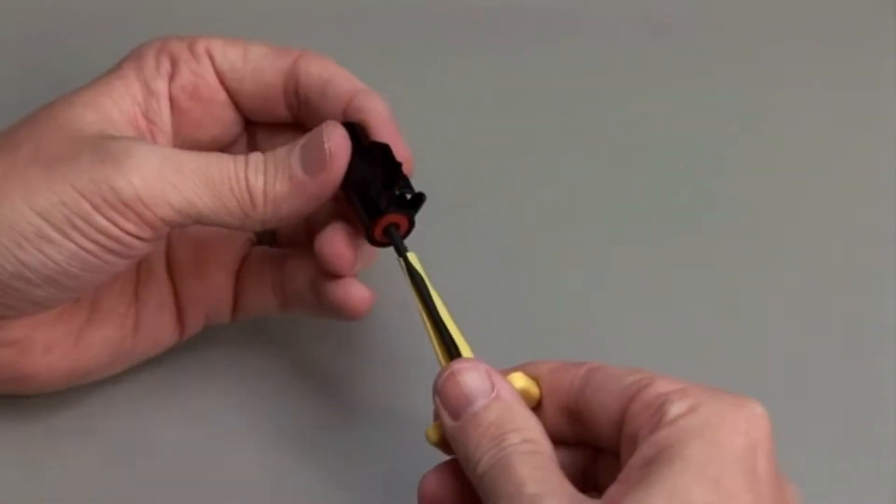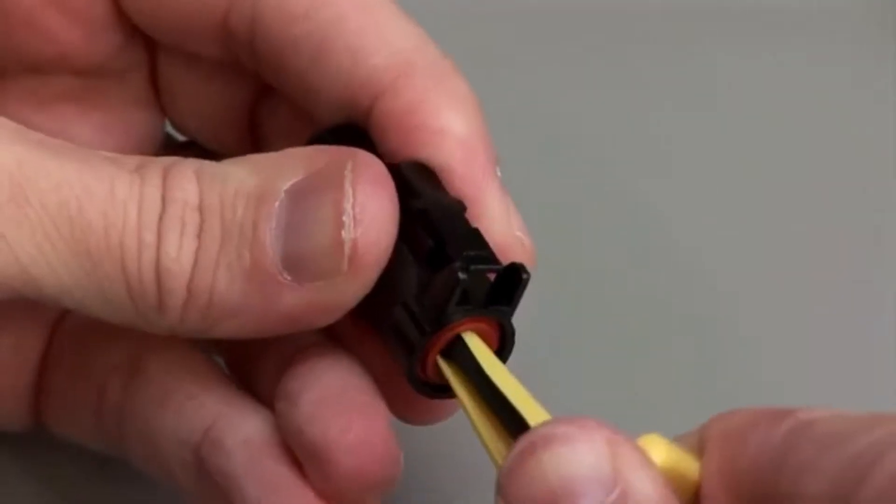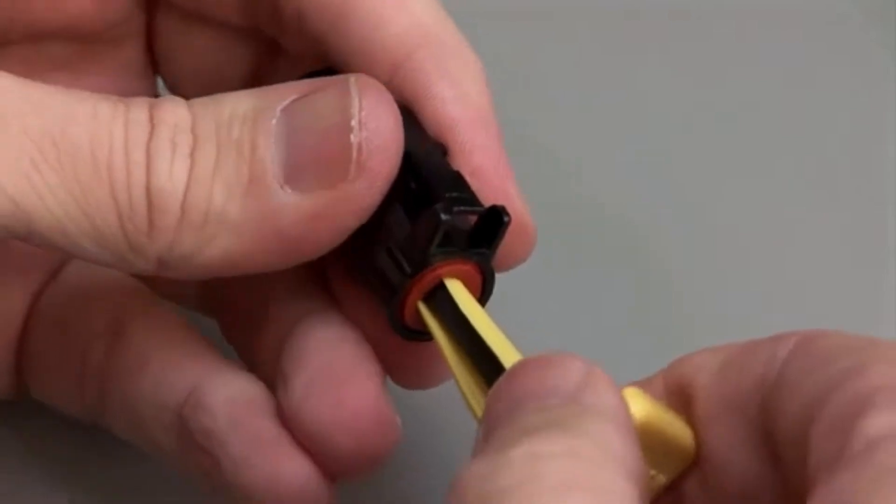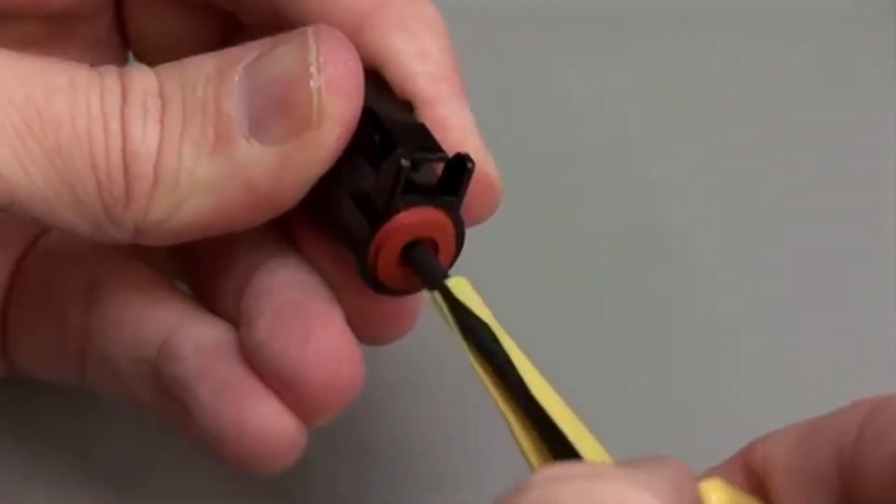Slide the tool along the wire into the cavity until it engages the contact and resistance is felt. Make sure you keep the tool straight and do not twist or angle the removal tool.